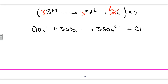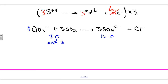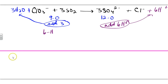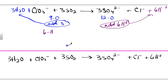Now we balance oxygens and hydrogens. First we confirm masses: one chlorine on each side, three sulfurs on each side. We save oxygen and hydrogen for last. Counting oxygens: three times two is six, plus three gives nine oxygens on the left; three times four is twelve on the right. We need three more on the left, so we add three waters. That gives six hydrogens on the left and none on the right, so we add six H⁺ on the right. That is our final equation.